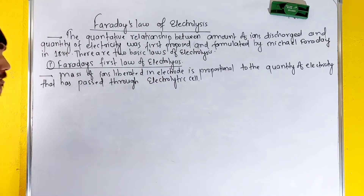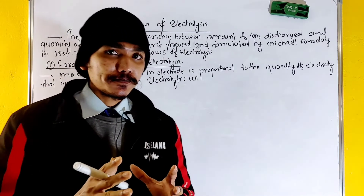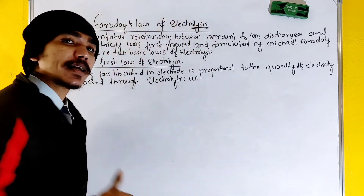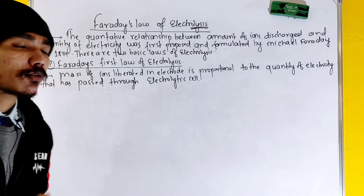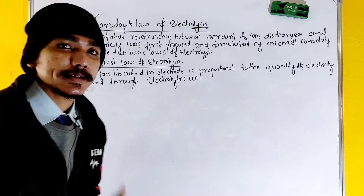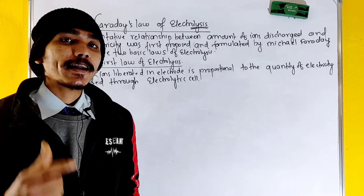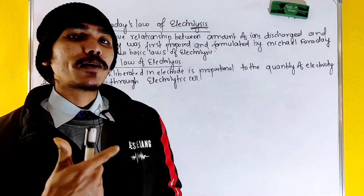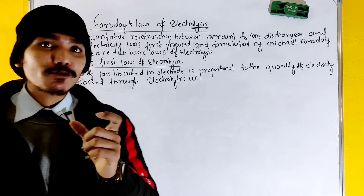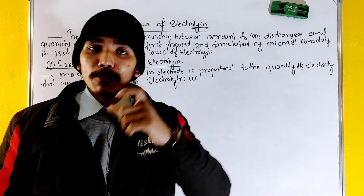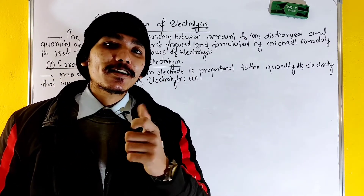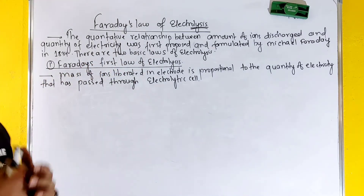In electrolysis, 'lysis' means breakdown. Similarly in organic chemistry, we use heterolysis and homolysis. Heterolysis produces carbocations and carbanions. Homolysis produces free radicals. So we use the term 'lysis' to indicate breakdown.